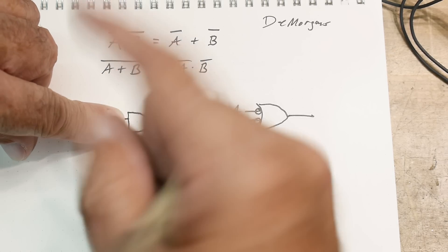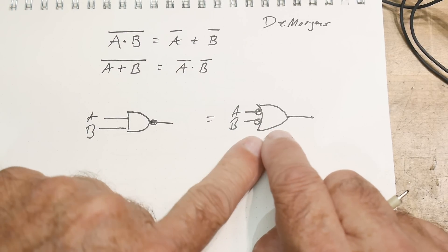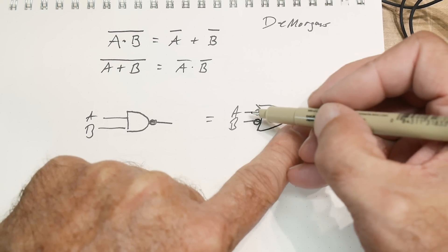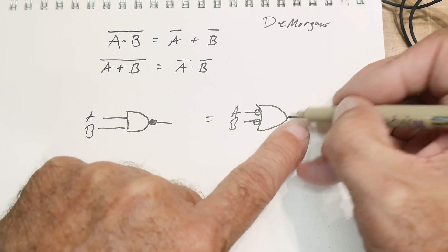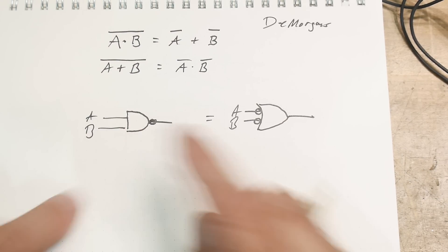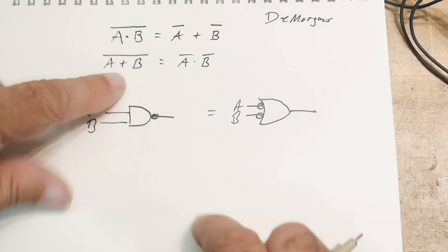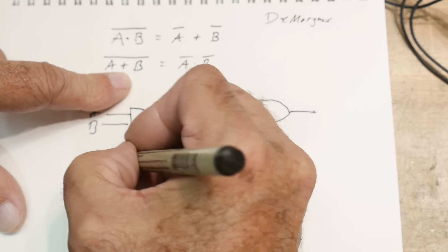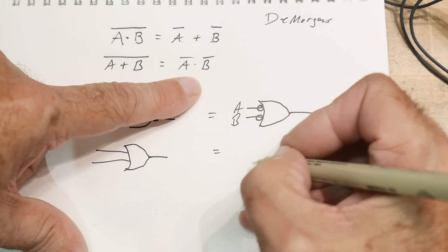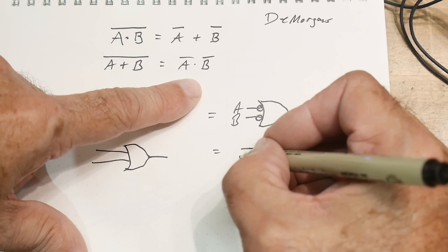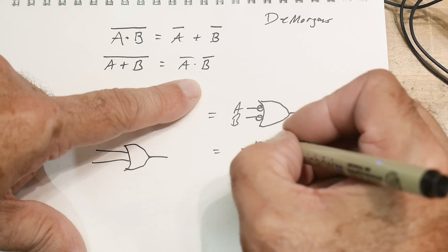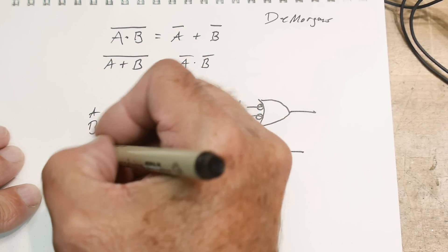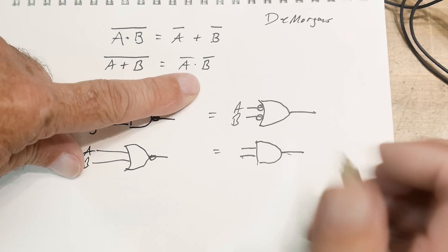It says A AND B NOT equals NOT A and NOT B. If you look at these two, you don't have to think of any math - if you put circles everywhere you change the shape. If you have an AND you make it an OR, if you have an OR you make it an AND. These two circles cancel each other out.